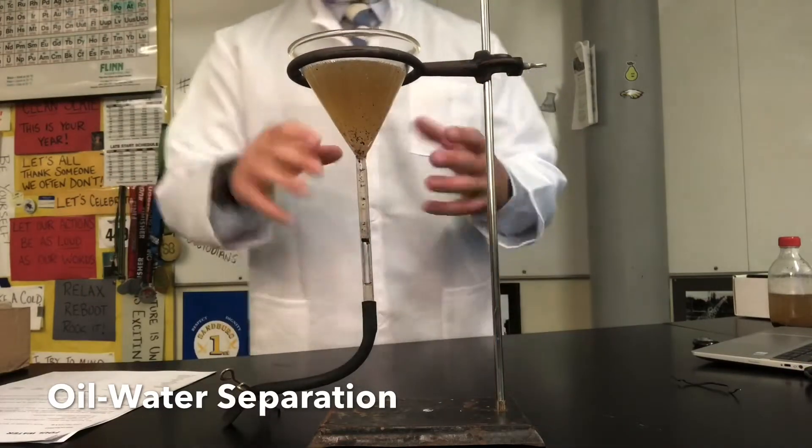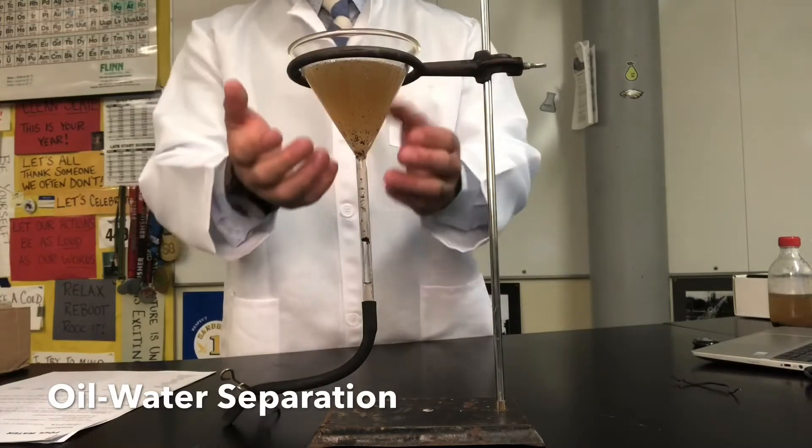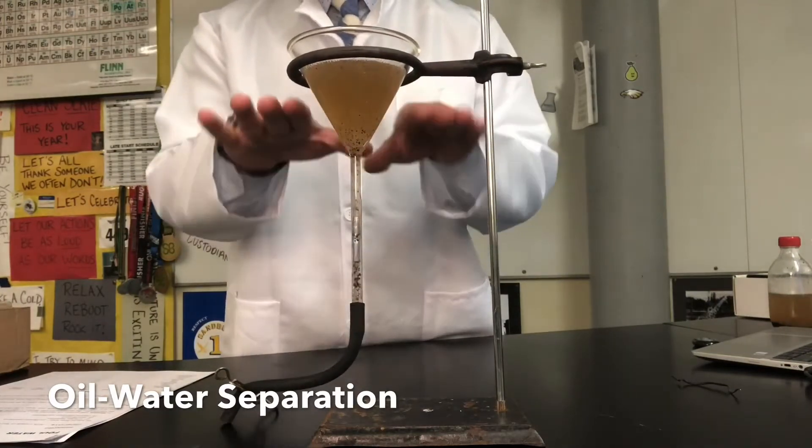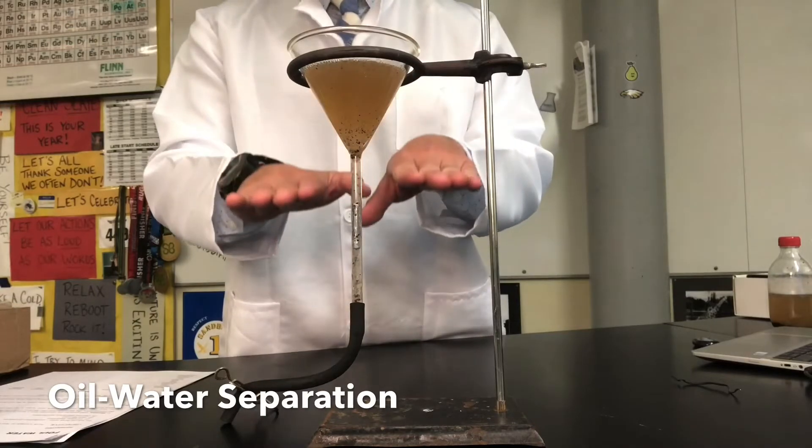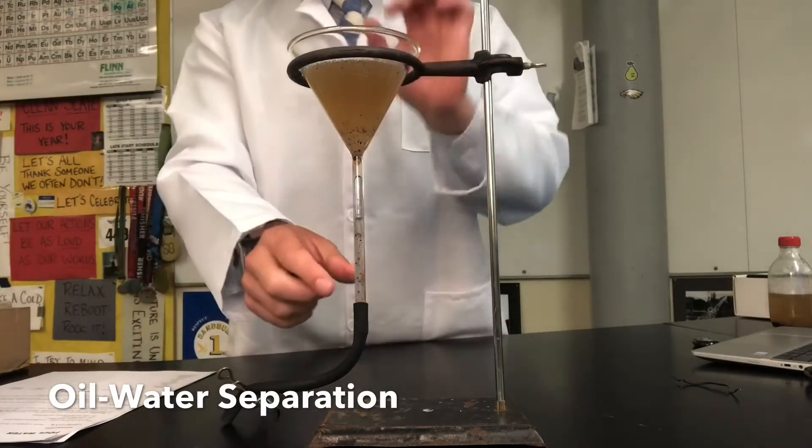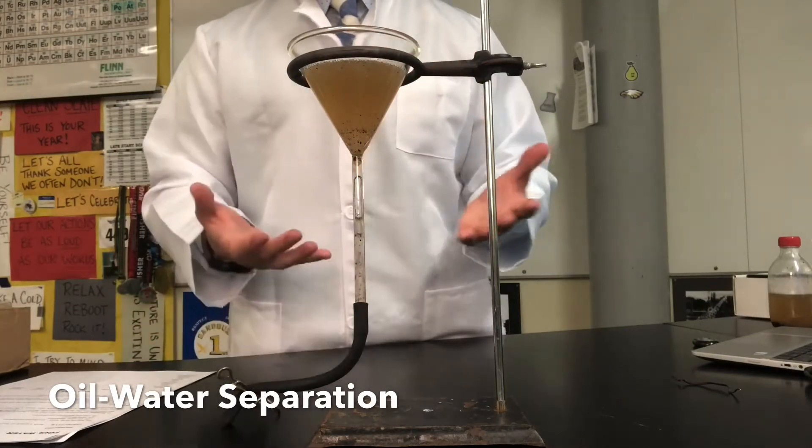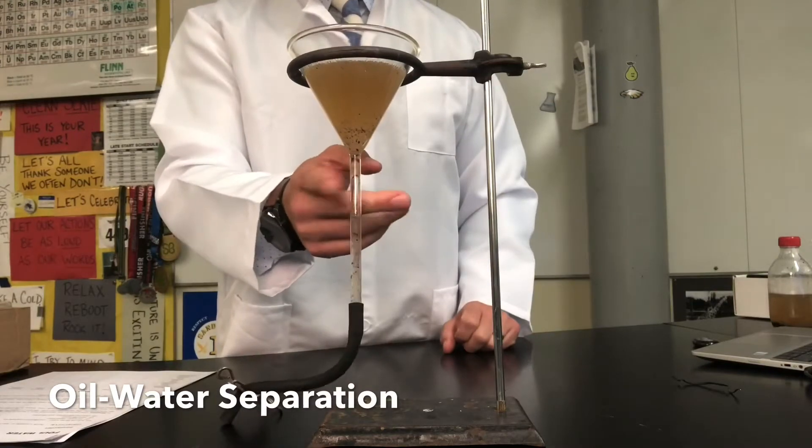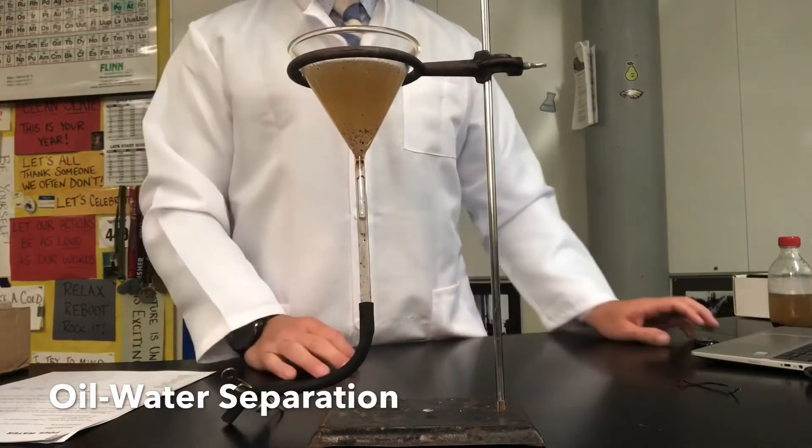So what I'm going to be doing is taking advantage of the difference of their densities so that eventually I can get all the oil to the top and physically separate the water towards the bottom. I'll then be able to let out the water from the bottom and keep the oil behind. That's the goal. So we're going to give this a few minutes to set up and sit so we can try to separate these as best as possible.